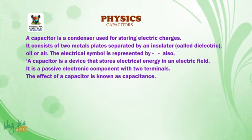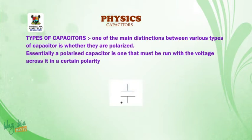A capacitor is a condenser used for storing electric charges. It consists of two metal plates separated by an insulator called dielectric. A capacitor can also be defined as a device that stores electrical energy in an electric field. It is a passive electronic component with two terminals. The effect of a capacitor is known as capacitance.